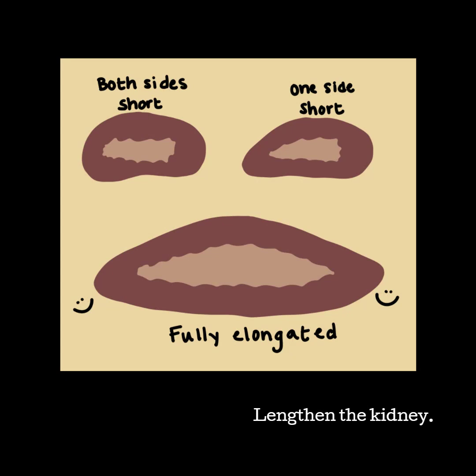This technique won't work on everyone, but you should always try to get the longest measurement of the kidney. That means finding the window that allows for more what I call pointy poles. Once you get one pole to be sharp, don't move that side of the transducer. Pivot the opposite side to elongate and sharpen the other pole.